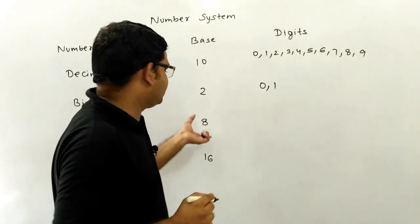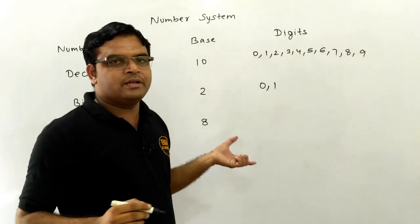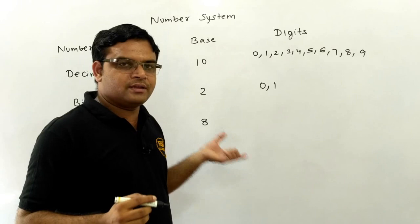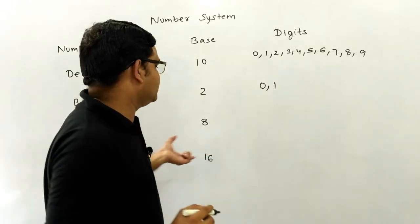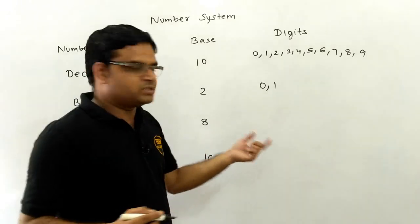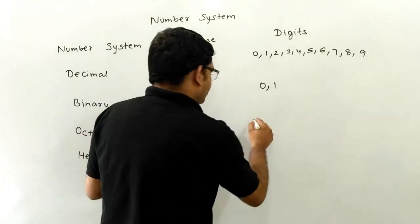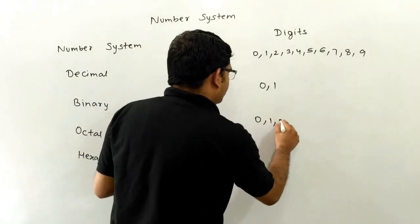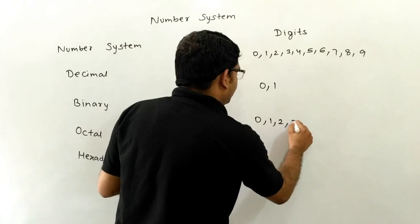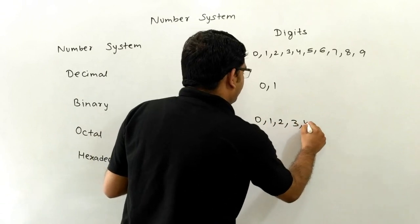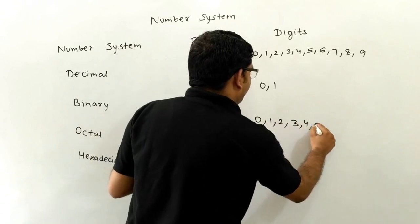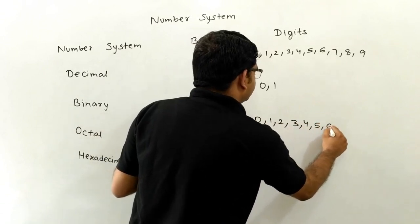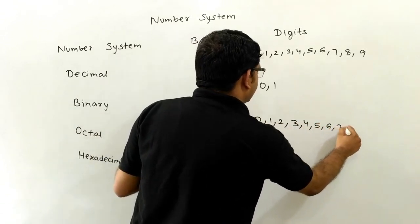Octal means 8, so it has only 8 digits, which are 0 to 7 — so 0, 1, 2, 3, 4, 5, 6, and 7.